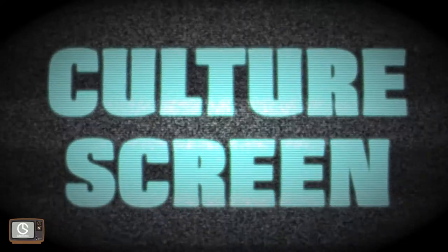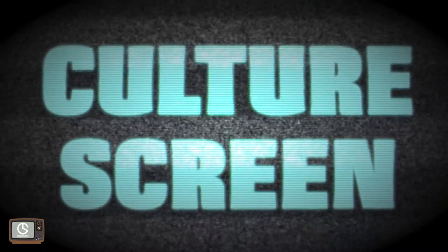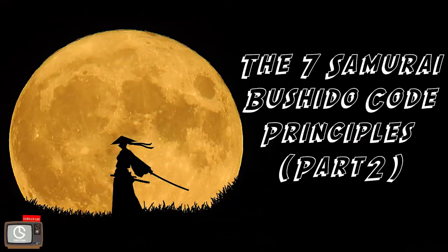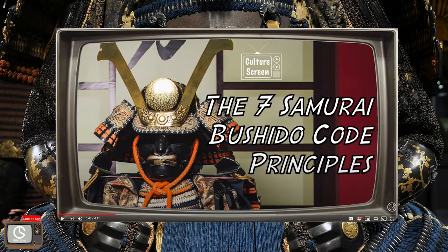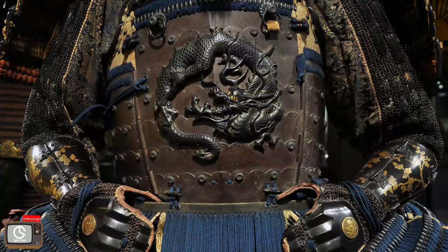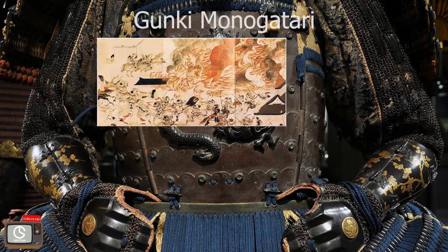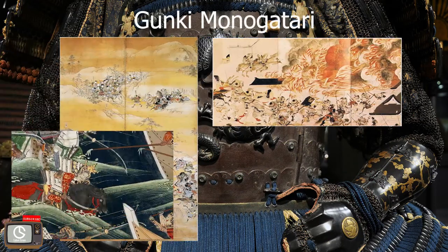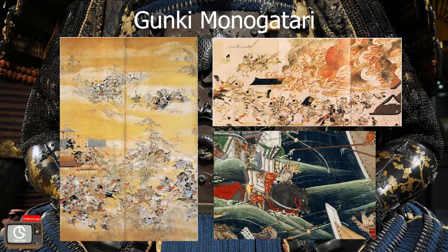Welcome to CultureScreen, where we analyze culture through Countdown. This episode is part 2 of the Samurai Bushido Code Principles. If you haven't seen part 1, I recommend you watch that first. In this video, we will be discussing where the Samurai Bushido Code Principles originate. We will be looking at the Gunki Monogatari as a genre of Japanese literature as the source for the Bushido Code.